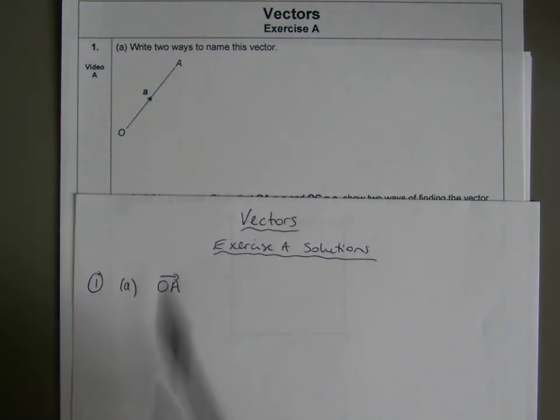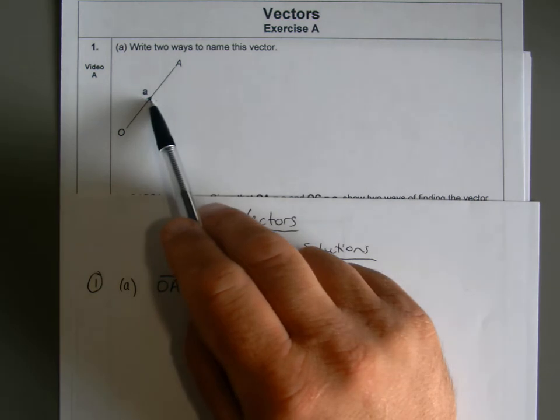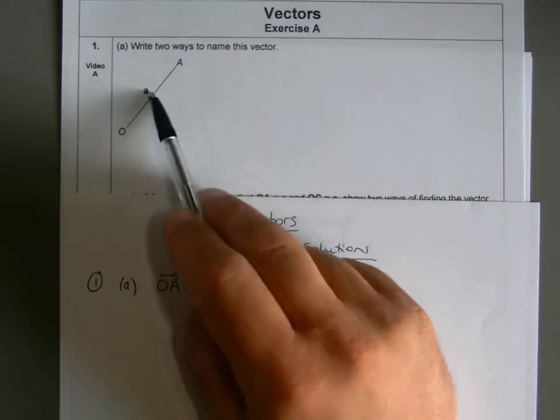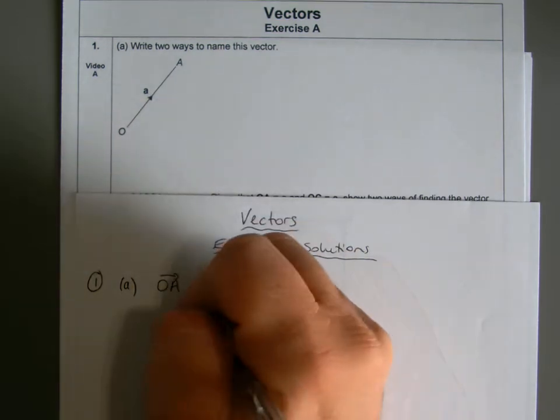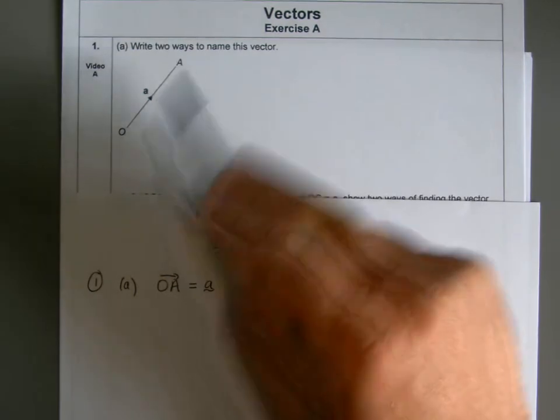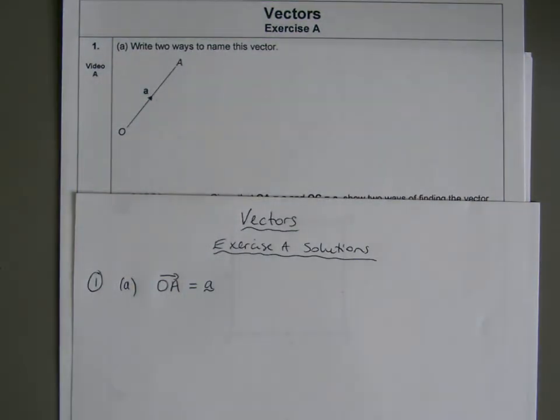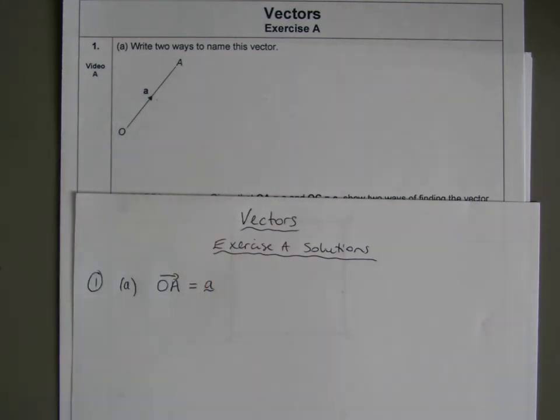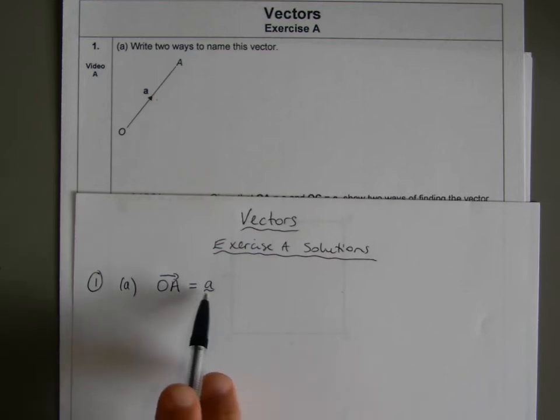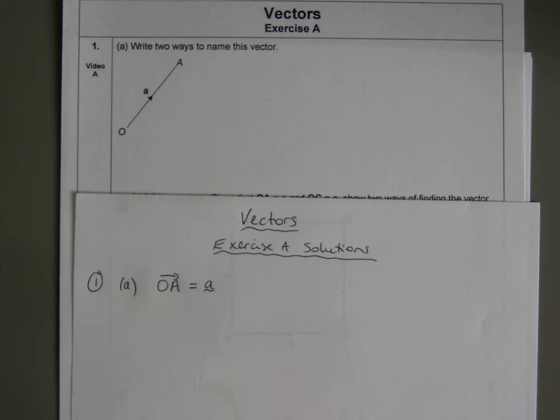Often they'll also tell us that OA is actually equal to something else. So another way we could name this is to call it little a. So going from O to A, that vector there, that displacement, we can call little a. And again it's bolded in a text on a worksheet or exam paper, but when we write it we just underline the little letters.